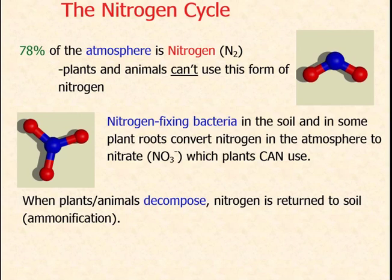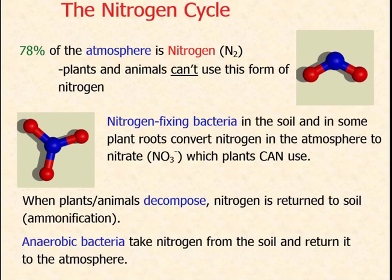Nitrogen-fixing bacteria tend to be found in the roots of plants called legumes — including nuts, soybeans, and beans. When plants and animals decompose, the nitrogen in their amino acids and DNA is returned to the soil. To complete the cycle, another group called anaerobic bacteria take nitrogen from the soil and return it back to the atmosphere.